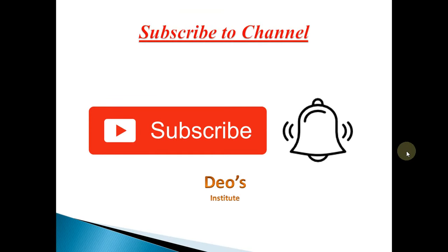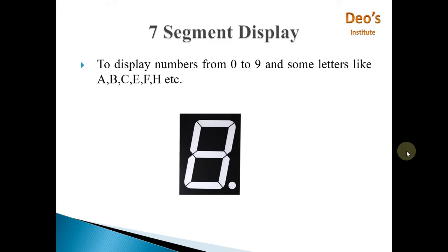Click on the bell icon to get instant notification when I upload new videos. It is absolutely free of cost. 7 segment displays are widely used to display numbers from 0 to 9 and some letters like A, B, C, E, F, H, etc.